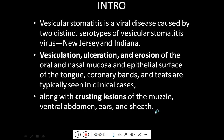Coming toward its introduction, vesicular stomatitis is a viral disease caused by two distinct serotypes of vesicular stomatitis virus, commonly known in America as New Jersey and Indiana serotypes. The typical signs are vesiculation, ulceration and erosion of the oral and nasal mucosa and epithelial surface of the tongue, and the coronary band near the foot region. Cresting lesions of the muzzle and ventral abdomen, on the ears and on the sheath are also typically seen in clinical cases.